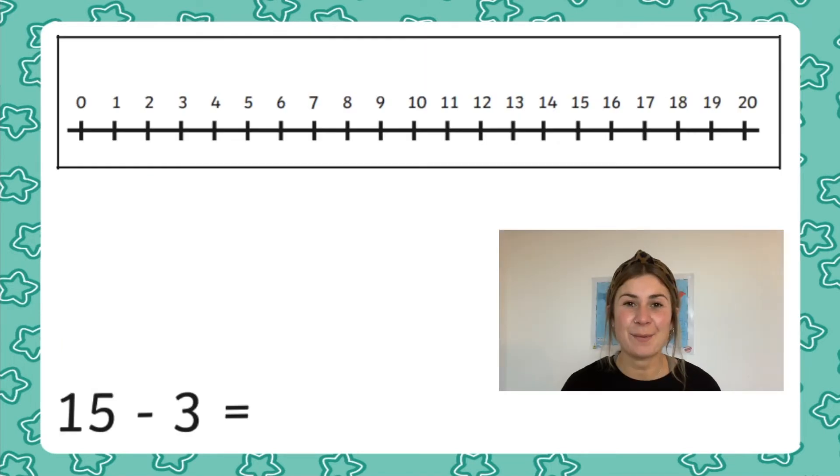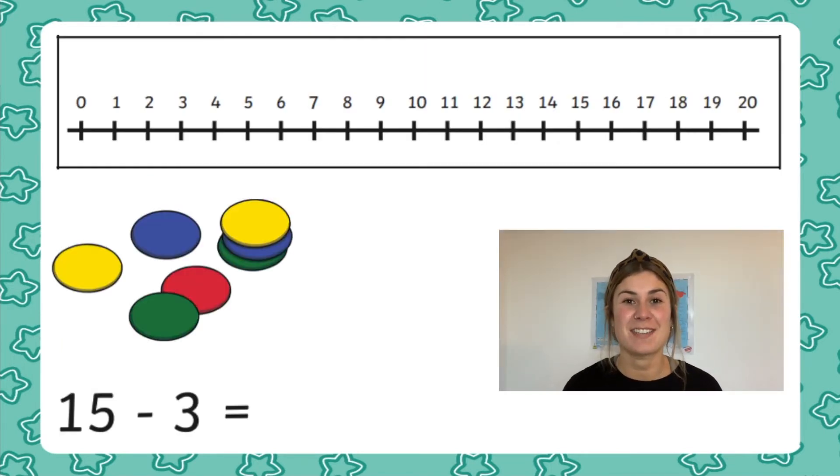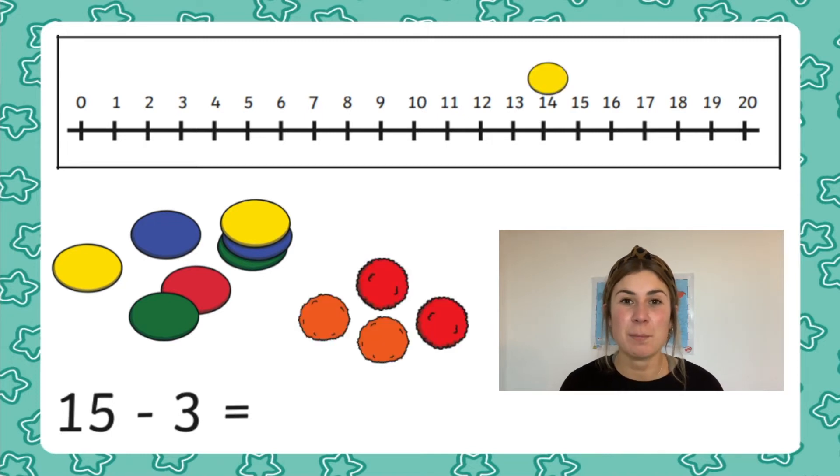Whilst counting down your children could also use objects such as counters, pom-poms or even chickpeas to track where they're up to on the number line.